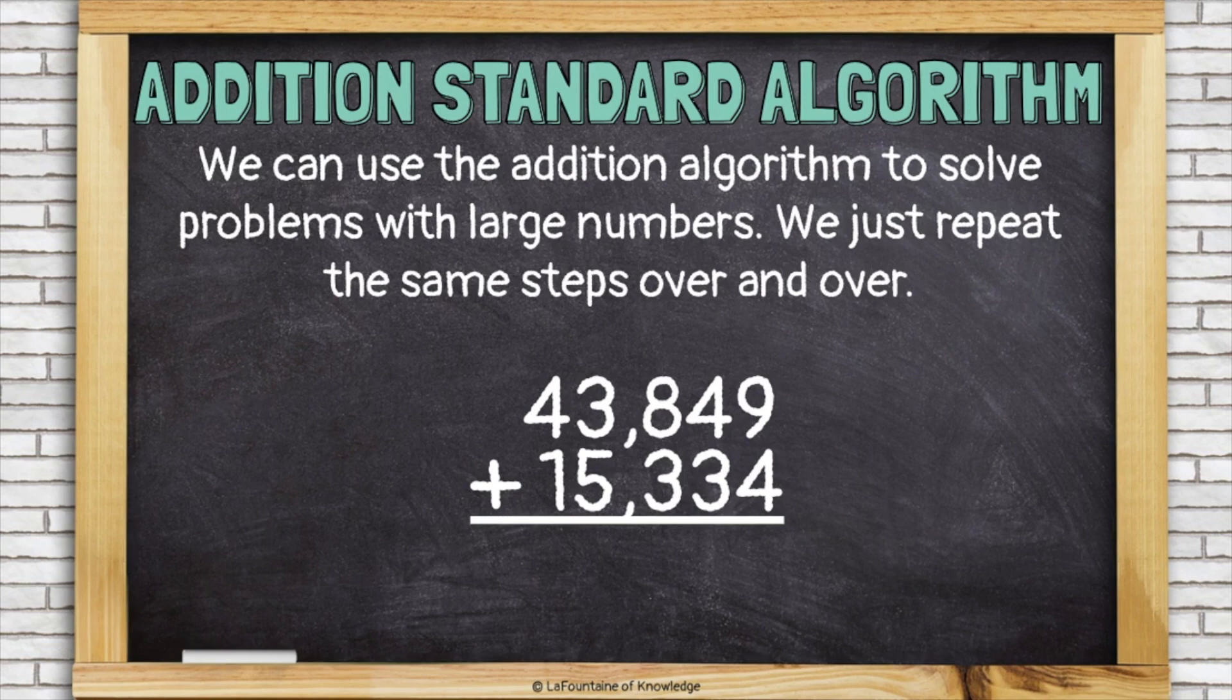We can use the addition algorithm to solve problems with larger numbers. We just repeat the same steps over and over. Let's take a look at this problem: 43,849 plus 15,334. We'll start in the ones place. 9 plus 4 is 13, and we know we can't put a 13 in the ones place, so we put down 3 ones and carry or regroup that group of 10 to be with the other tens. Now let's add all our tens together. 1 ten plus 4 tens plus 3 tens is 8 tens.